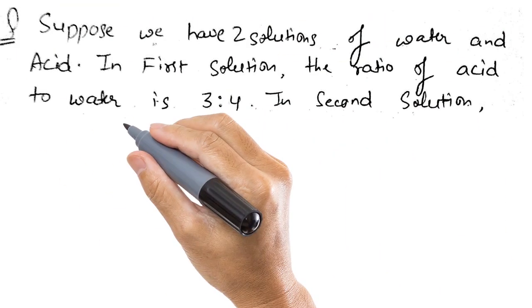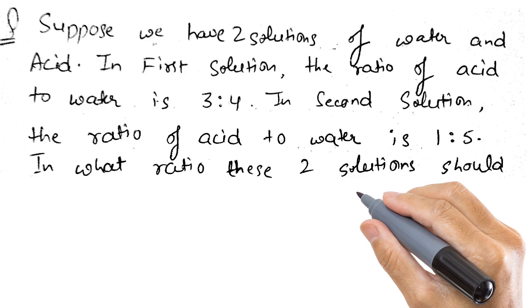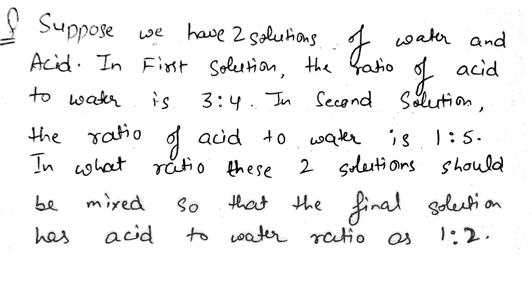Suppose we have two solutions of water and acid. In the first solution the ratio of acid to water is 3 is to 4. In the second solution the ratio of acid to water is 1 is to 5. In what ratio should these two solutions be mixed so that the final solution has acid to water ratio as 1 is to 2?